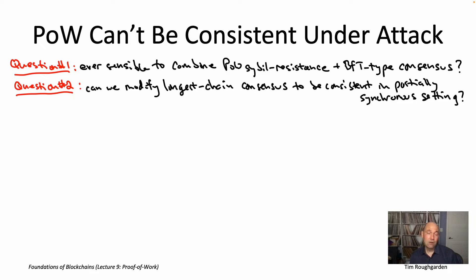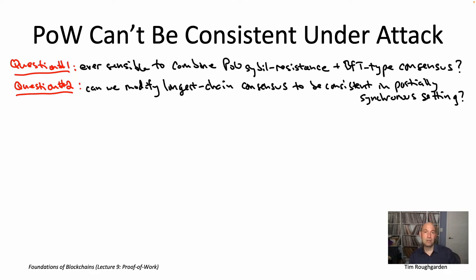For longest chain consensus, on the other hand, we wrapped up lecture number eight by pointing out that it does not enjoy consistency in the partially synchronous setting. Attacks and network outages can really mess up consistency for longest chain consensus.